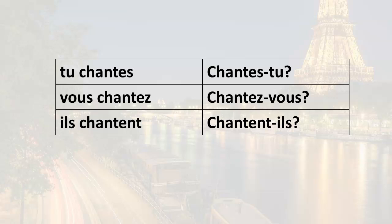So I've taken just a few examples. Remember that one way to ask yes or no questions in French is to take a statement — like tu chantes, meaning 'you sing' — and reverse the word order. And remember that you have to add a hyphen between the conjugated verb and the subject pronoun when you do this.